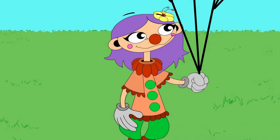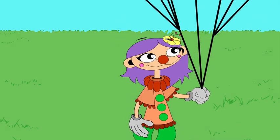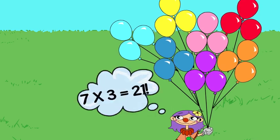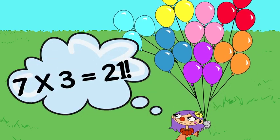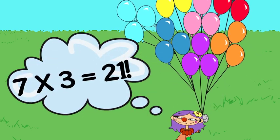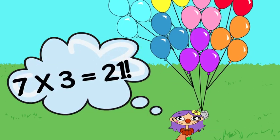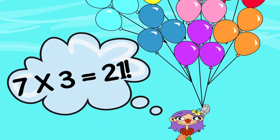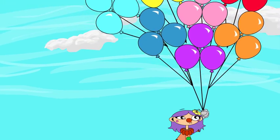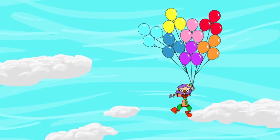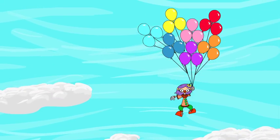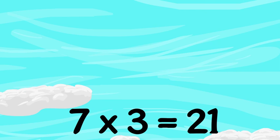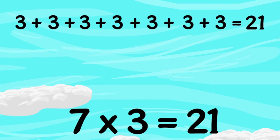Or we can multiply. 7 times 3 is 21. You can see that multiplication makes adding equal groups fast and easy.